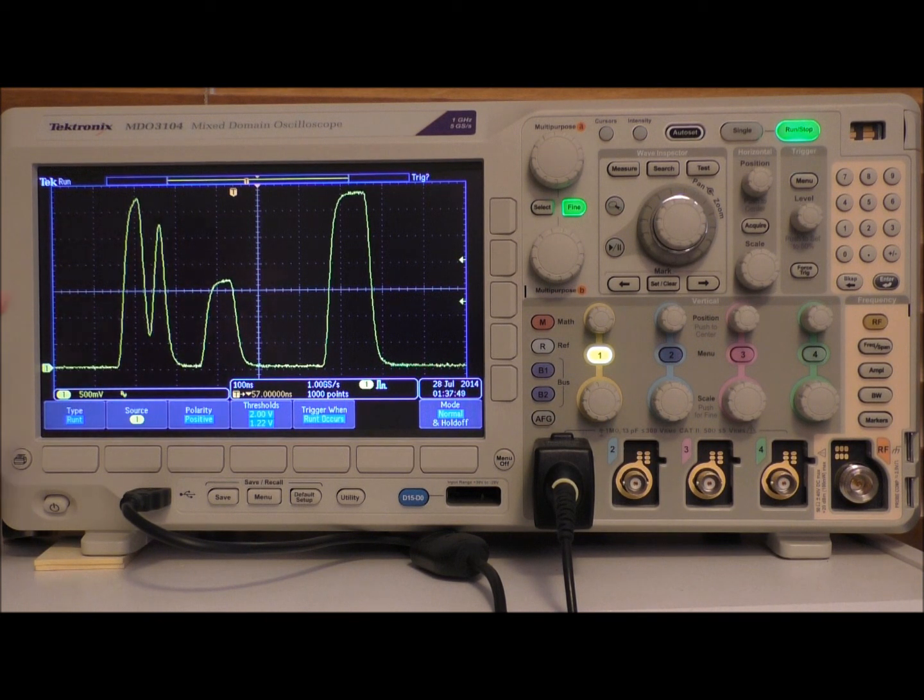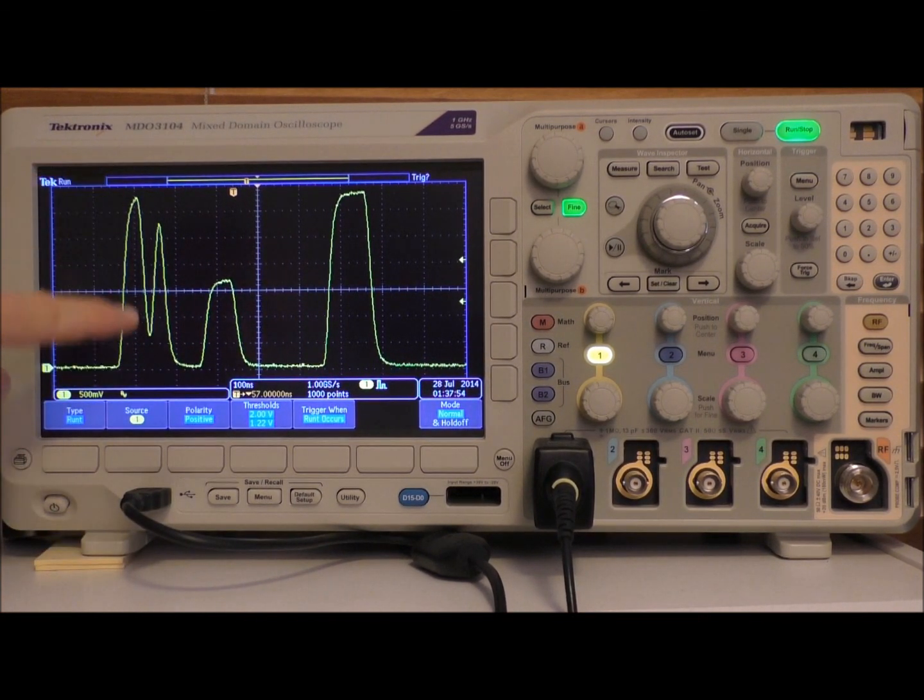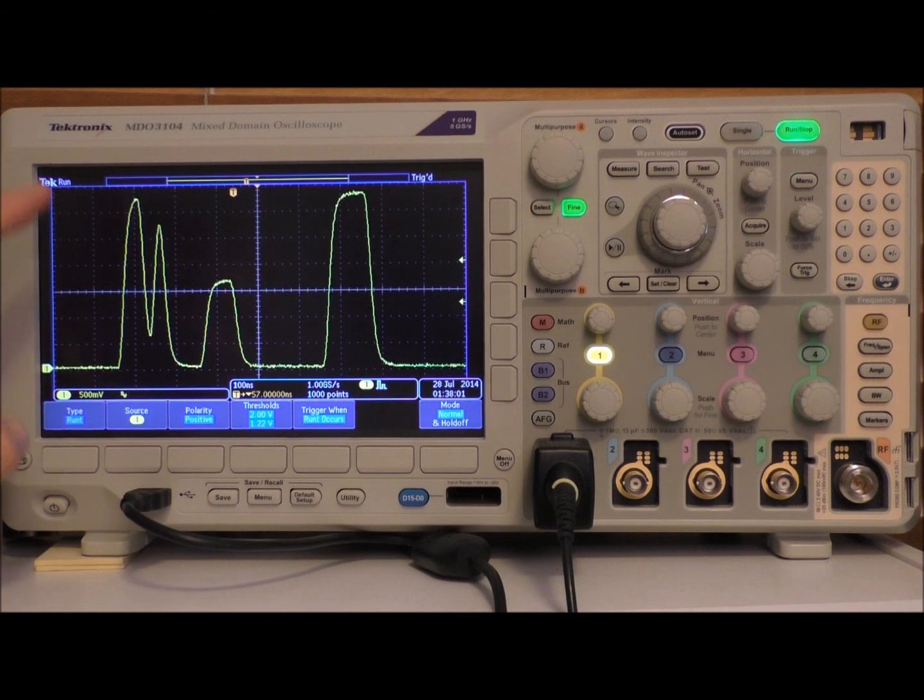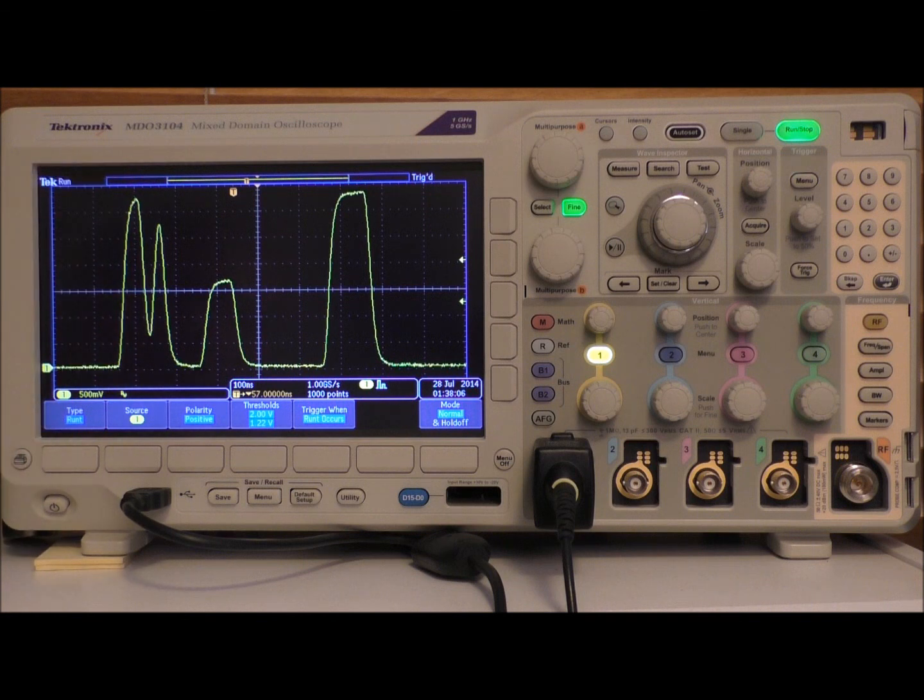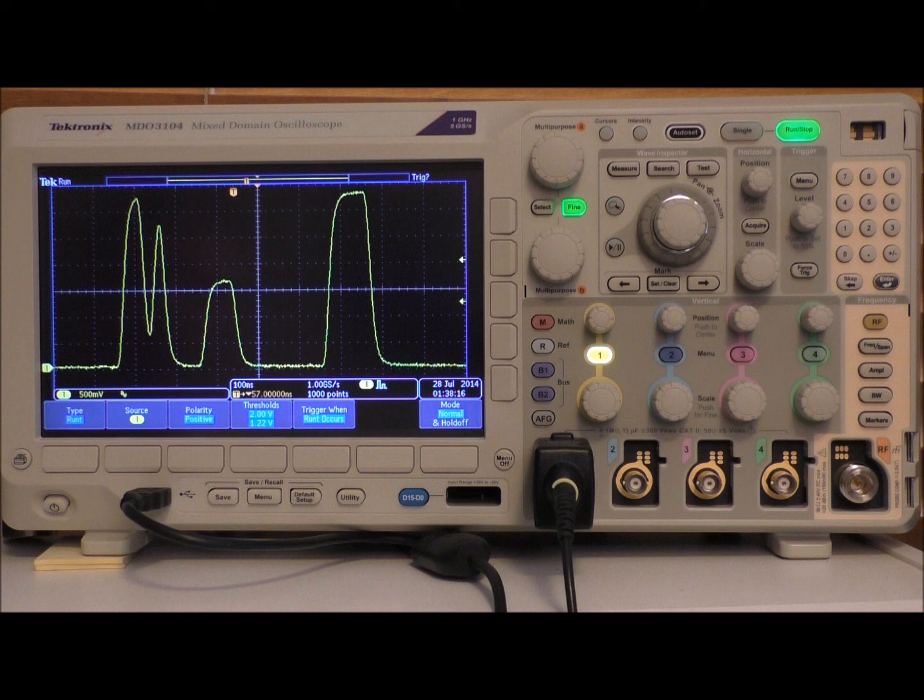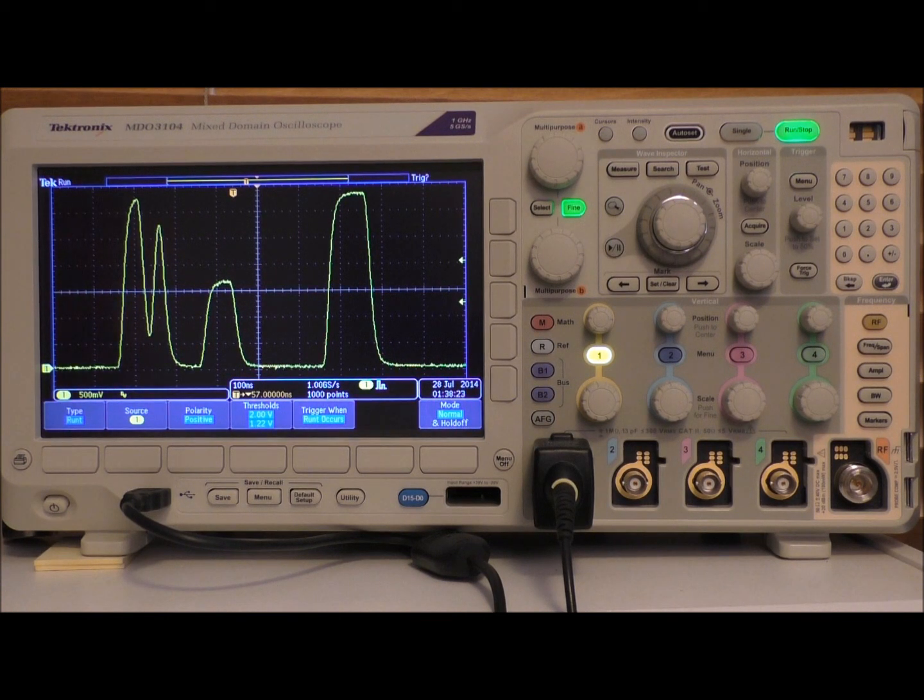Now, I do want to mention that if this runt signal right here was occurring at a different instance than this strange anomalous dip, then while we would be able to capture this, the triggering on this MDO is not clever enough to get this kind of signal. Well, maybe I guess we could use the runt and zero it in on this area right here on a negative falling slope and zero in on this runt signal. But it's really tough to capture something that is more based in time domain than voltage domain.